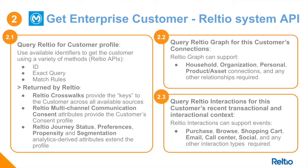Breaking this down further, we're going to query Raltio using a number of different available pieces of data that we will have captured from the experience API. Coming back from Raltio is going to be a plethora of data that includes the keys to the customer from across all other systems and sources, the multi-channel communication consent that's been afforded, and any additional information as required. It's point 2.1 here that we're going to take a look at in more depth.